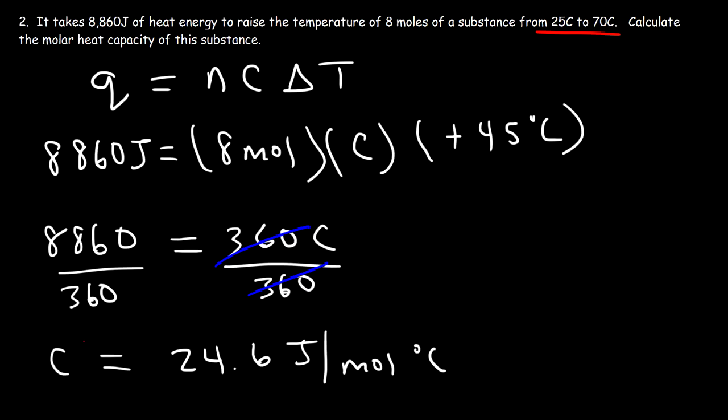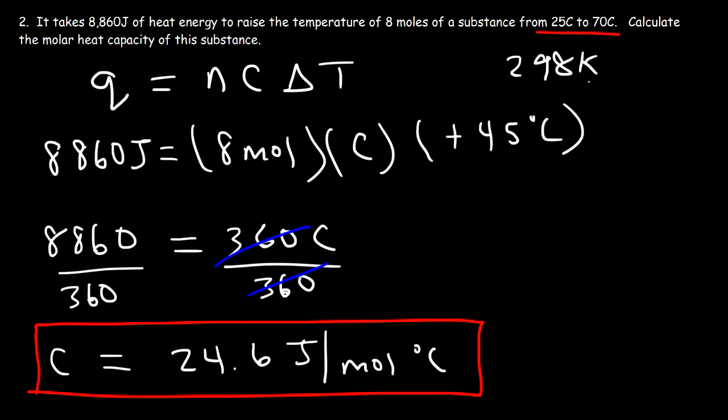Sometimes you might see it as joules per mole per Kelvin. And the difference in two temperatures in Celsius or in Kelvin is the same. For example, if you convert 25 Celsius to Kelvin by adding 273, that's 298 Kelvin. 70 plus 273 is 343 Kelvin. However, if you subtract 343 by 298, the difference is still 45. So the difference in the Celsius temperature is the same as the difference in the Kelvin temperature.